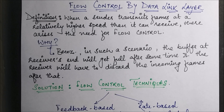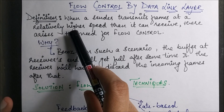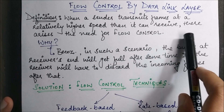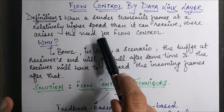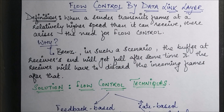In this session I'm going to focus upon flow control. So first of all, what is the basic definition of flow control? It is when a sender transmits frames at a relatively higher speed than they can be received by the receiver — that is when there arises the need of flow control.